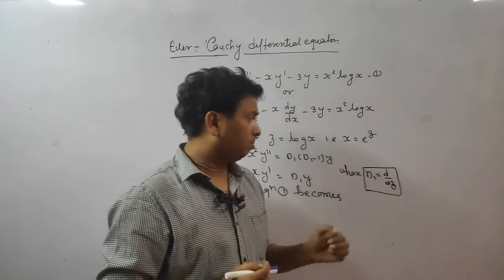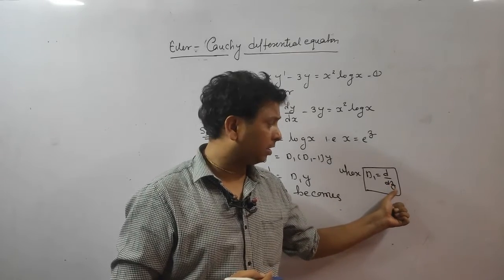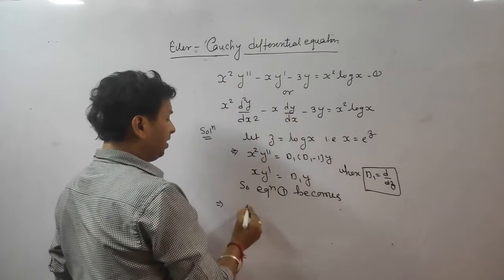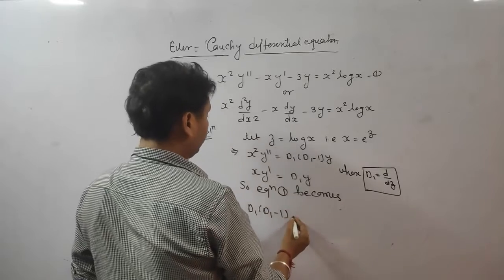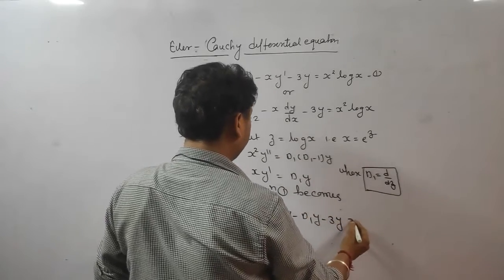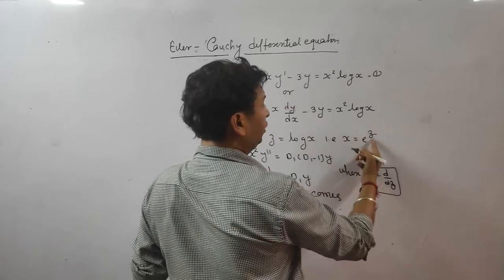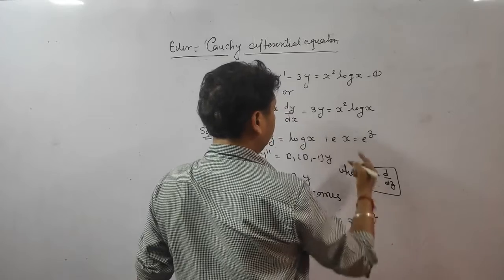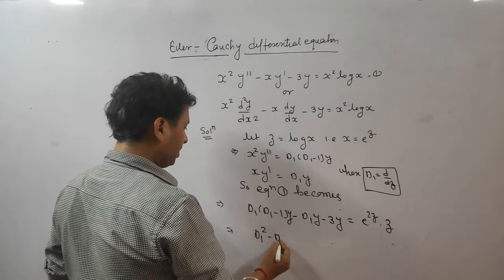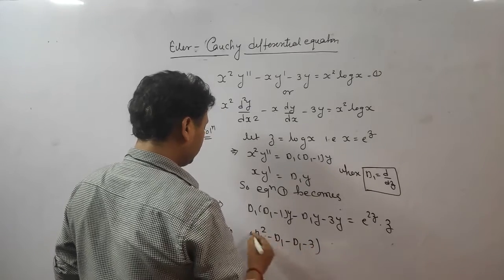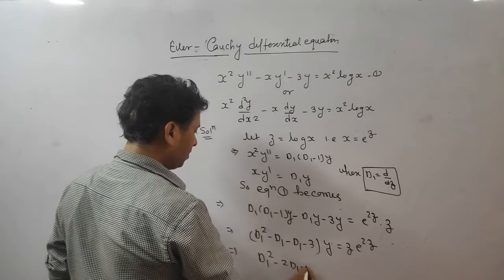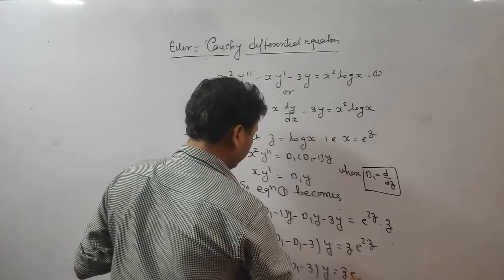Note that D₁ = d/dz — this is very important and a common source of mistakes. Now converting to z: x² y'' → D₁(D₁-1)y, x y' → D₁y, minus 3y, equals x² log x. Since x = e^z, x² = e^{2z} and log x = z. So the equation becomes D₁² - 2D₁ - 3 of y = z e^{2z}.